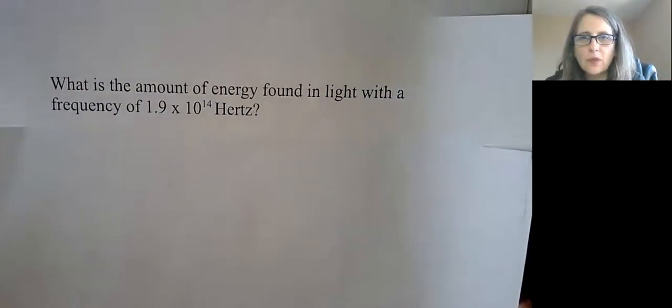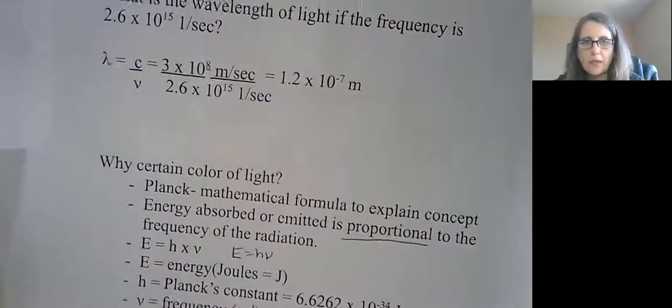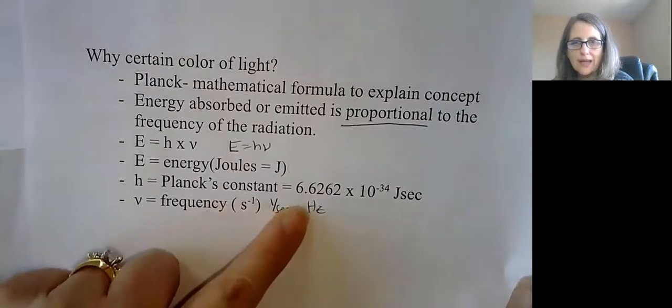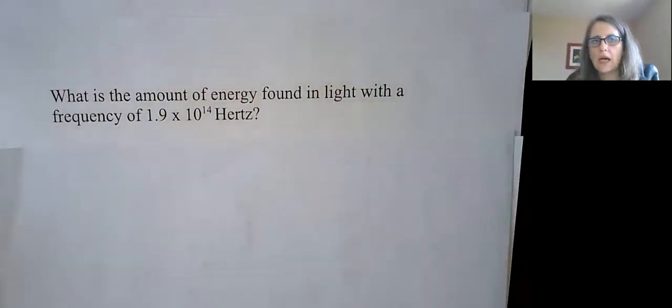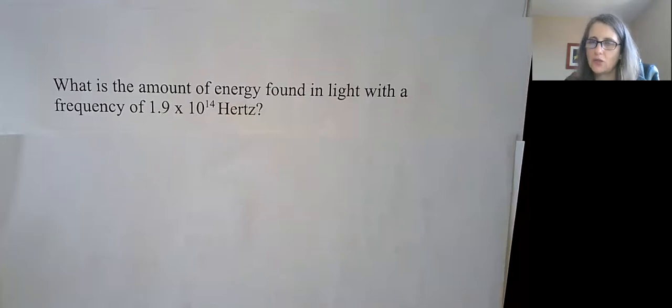With this calculation, I'm going to show you a couple examples. What is the amount of energy found in light with a frequency of 1.9 times 10 to the 14th hertz? Energy is going to be Planck's constant times frequency. So you're just taking Planck's constant that will be given to you, and you're going to multiply it by the frequency in hertz. You're just going to have to pay attention to the power of 10 and making sure you're putting it correctly in your calculator. Pause the video and see if you could get an answer for the amount of energy.